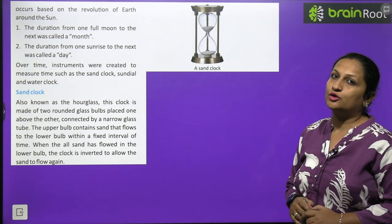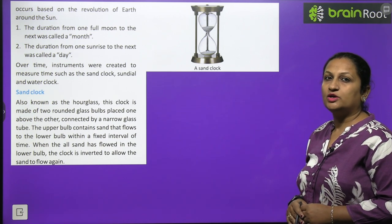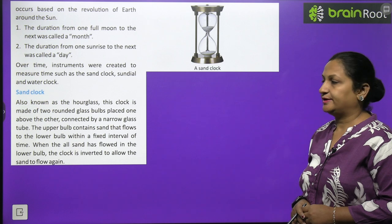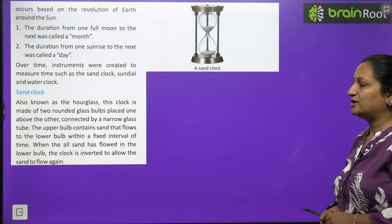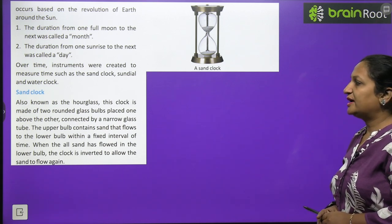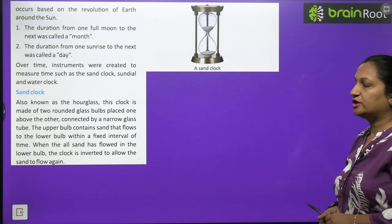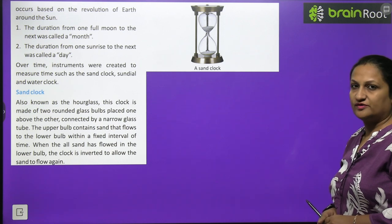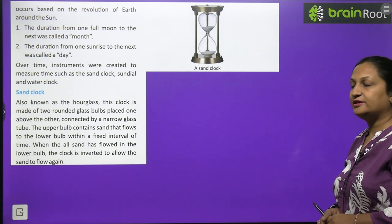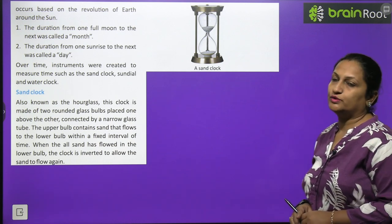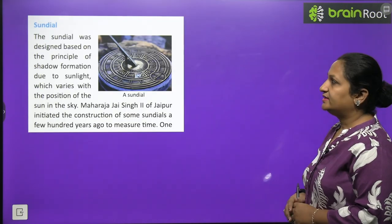The sand clock, also known as an hourglass, has two glass bulbs — one filled with sand. It is inverted and we estimate time by how long the sand takes to flow from the upper bulb to the lower bulb. This clock is made of two round glass bulbs placed one above the other, connected by a narrow glass tube. When all the sand has flowed into the lower bulb, the clock is inverted to allow the sand to flow again.